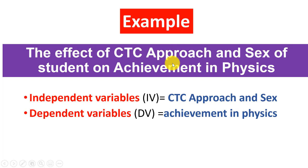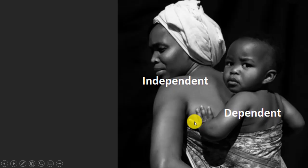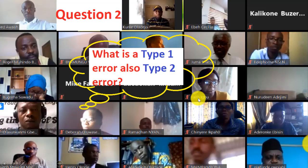For example: the effect of the CTC approach and sex of students on achievement in physics. CTC approach and sex are the independent variables — achievement depends on them. So you have IV — CTC approach and sex — and DV — achievement in physics. Remember the image: the dependent variable is like the child dependent on the mother.